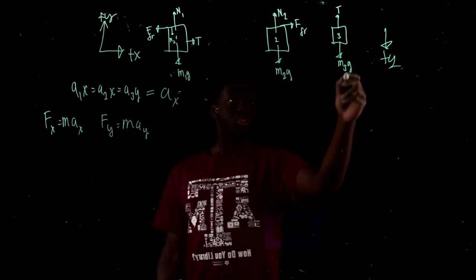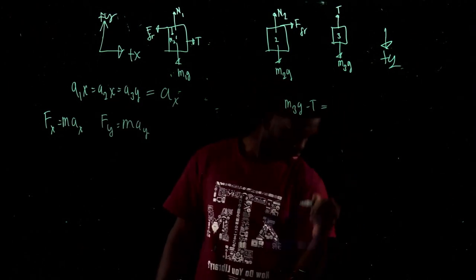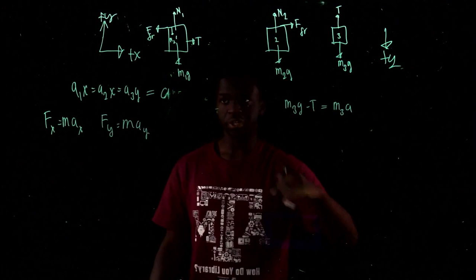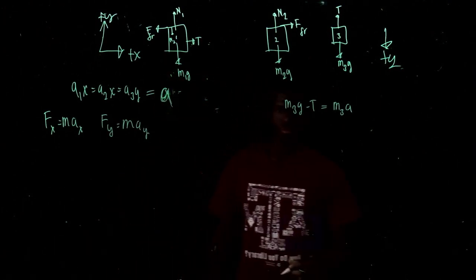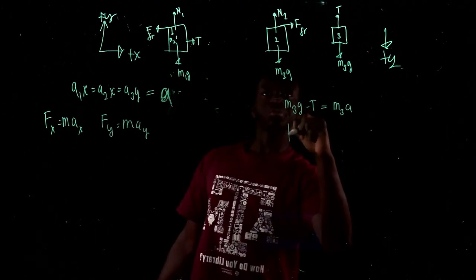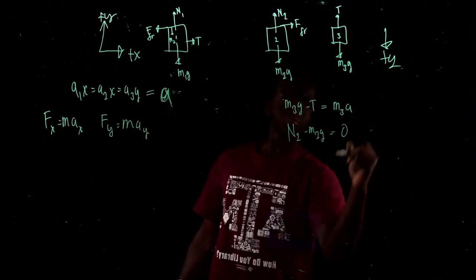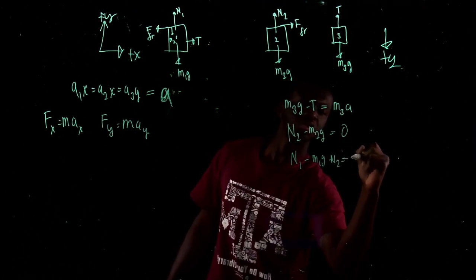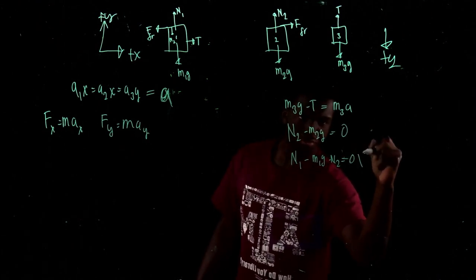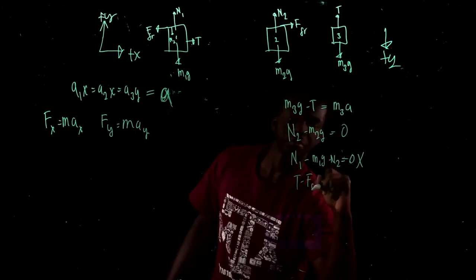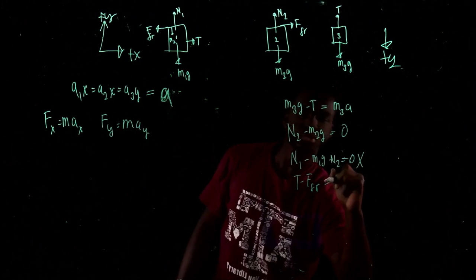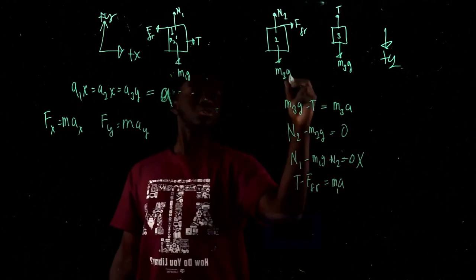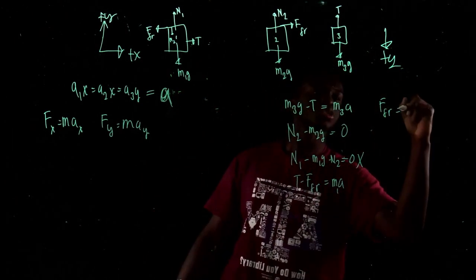Now let's get started. For block 3: M3G minus T equals M3A. We're just going to name all accelerations A. Then N2 minus M2G equals 0. And N1 minus M1G minus N2 equals 0. Then for block 1: T minus FFR equals M1A. And FFR equals M2A.